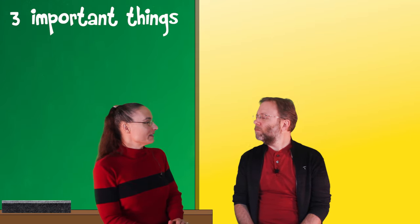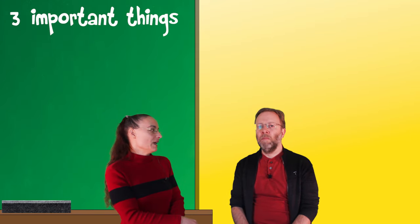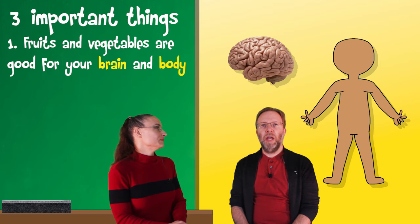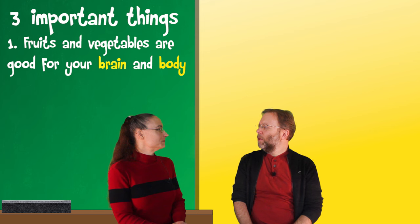So Tassi, I know there are three important things that we're supposed to know about eating fruits and vegetables, but I can't remember what they are. Can you help me? I can totally help you. They're not that hard, Zach. The first one is that healthy vegetables are good for your brain and your body. Oh, okay. Brain and body. I think I can remember that.